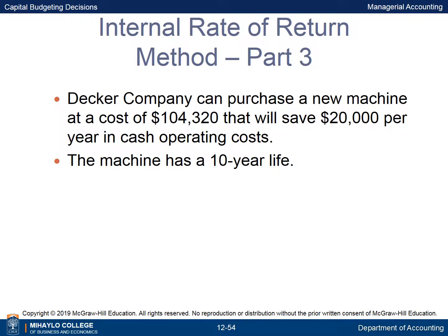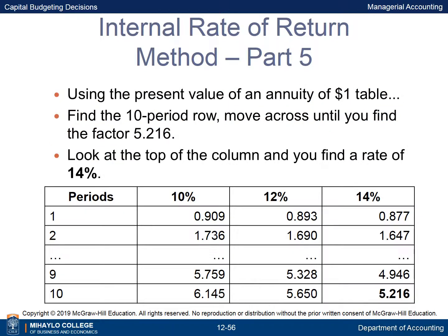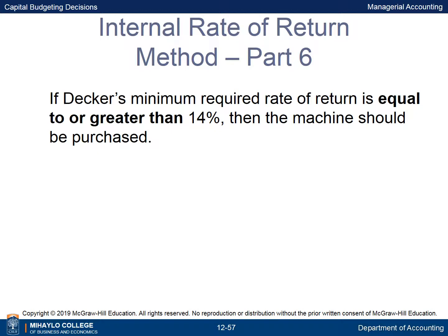Decker Company can purchase a new machine at a cost of $104,320 that will save $20,000 per year in cash operating costs over a 10-year life. Since cash flows are the same every year, the present value factor for the IRR equals the investment required divided by annual net cash inflows: $104,320 divided by $20,000 equals 5.216. Using the present value of an annuity of $1 table, finding the 10-period row and the factor 5.216 gives a rate of 14%. If Decker's minimum required rate of return is 14% or less, the machine should be purchased.